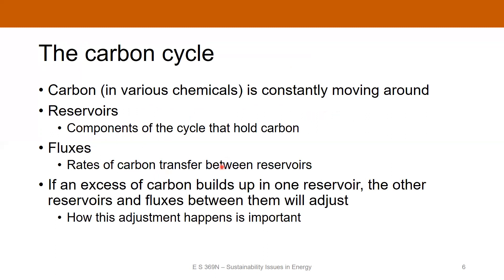Natural equilibrium dictates that if an excess of carbon builds up in one reservoir, the other reservoirs and fluxes between them will adjust. How this adjustment happens — by which pathways and how quickly — is important to understanding the overall carbon balance on earth.